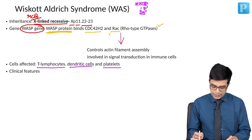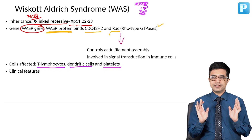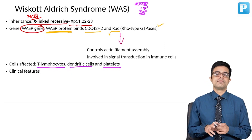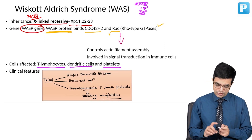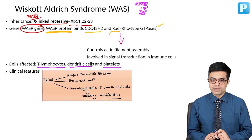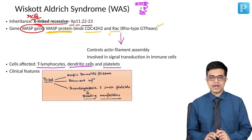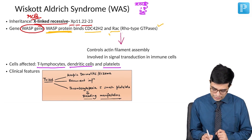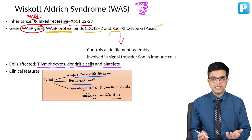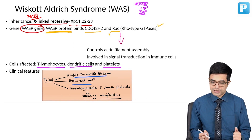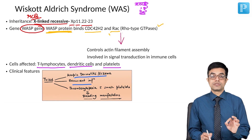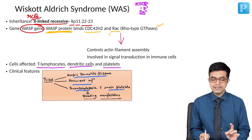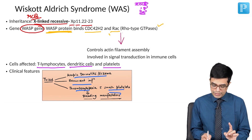The clinical features present as a very classic triad. First, there is an atopic dermatitis-like or eczematous rash — similar to what you see in atopic dermatitis. Second, there are recurrent bacterial and viral infections. Third, there is thrombocytopenia with small platelets — both the number and size of platelets are low — producing bleeding manifestations.